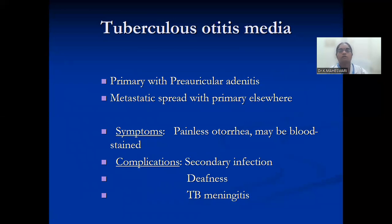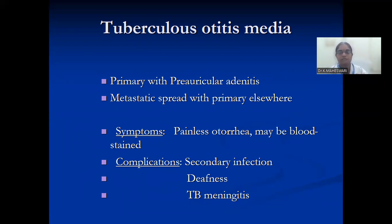Tuberculosis otitis media: it is either primary with preauricular involvement or metastatic spread from primary elsewhere. Symptoms include painless otorrhea, bloody discharge, and complications like secondary infection, deafness, and TB meningitis.